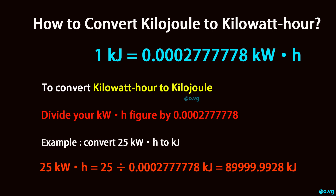Convert 25 kilowatt hour to kilojoule. 25 kilowatt hour equals 25 divided by 0.0002777778 kilojoule, which equals 90,000 kilojoule.